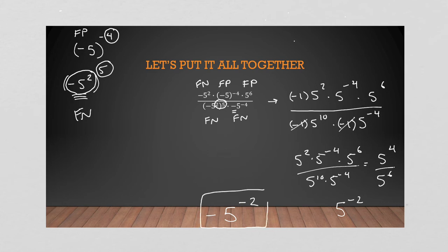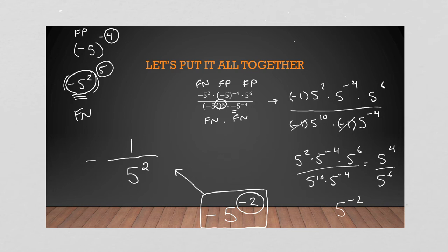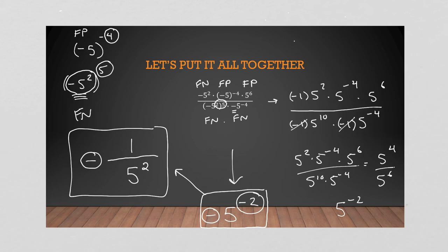So we end up with negative five to the negative two. Up to this point we haven't seen an answer like that, but we can deal with it — there'll be a whole video on this. The whole thing stays negative, but a negative exponent becomes positive when the number moves to the denominator, so we get negative one over five squared, which is negative one twenty-fifth. The negative is just from the negative value we carried, making it a negative fraction. That's the most detailed answer, but at this level negative one over twenty-five would be accepted.